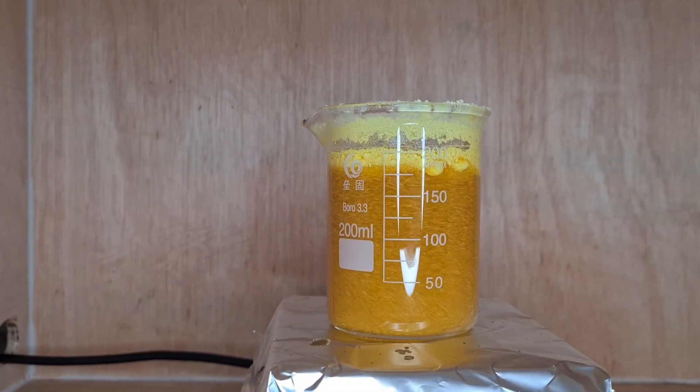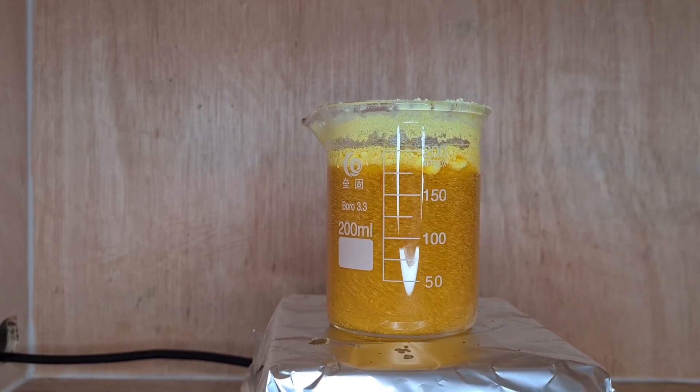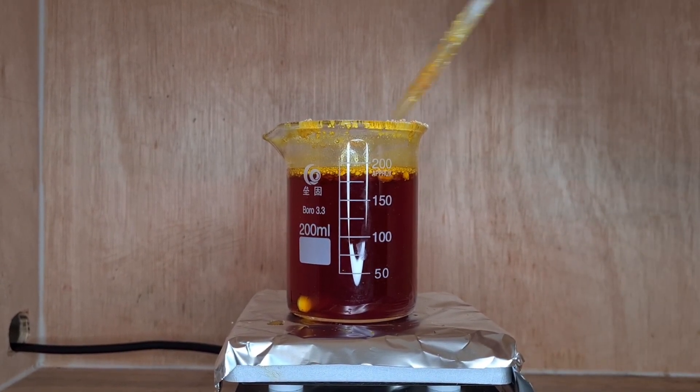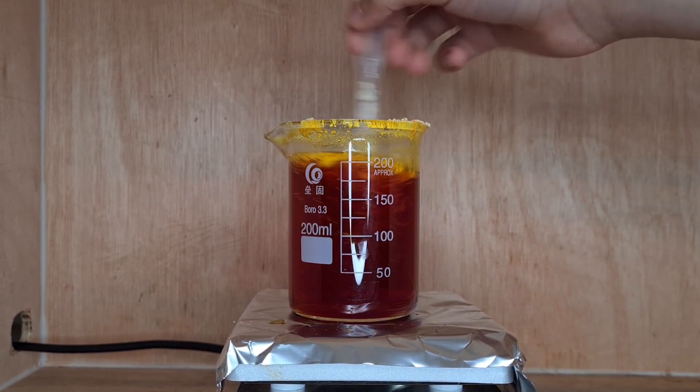Over time, more and more sulfur dissolves and it turns into this orangey-red solution. When it turns red, there's very little sulfur left and I just have to stir it more and more until all the sulfur dissolves.